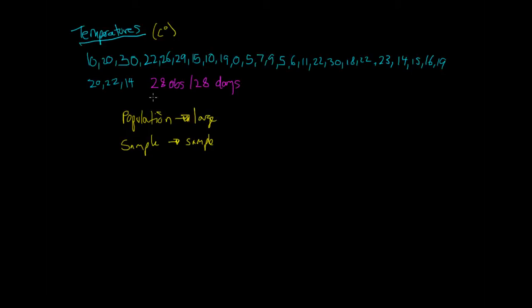Because this encapsulates all of the possible observations for all of the possible days, this data set here, which has these 28 numbers, is what we refer to as the population. And it is the largest possible data set for the items which we're interested in.